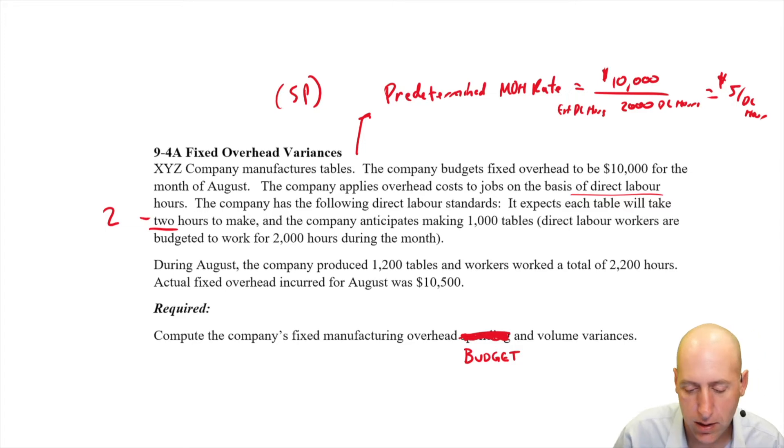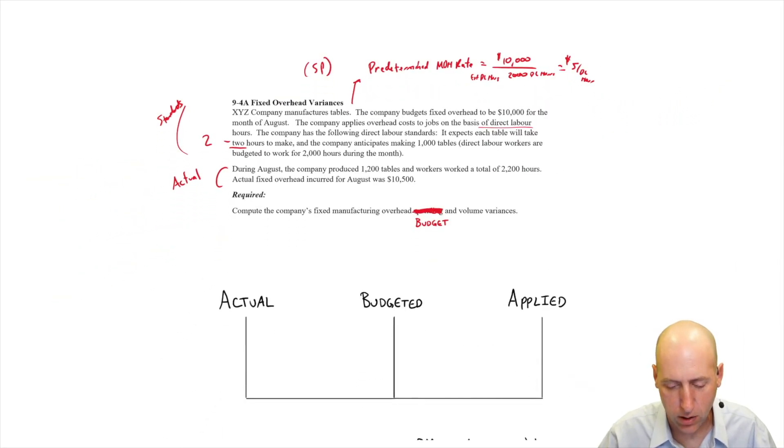During August, the company produced 1200 tables. And so these were all standards up top. We've got some actual data down below. Made 1200 tables and workers worked a total of 2200 hours. Actual fixed overhead incurred was $10,500. Compute the company's fixed overhead budget and volume variances.